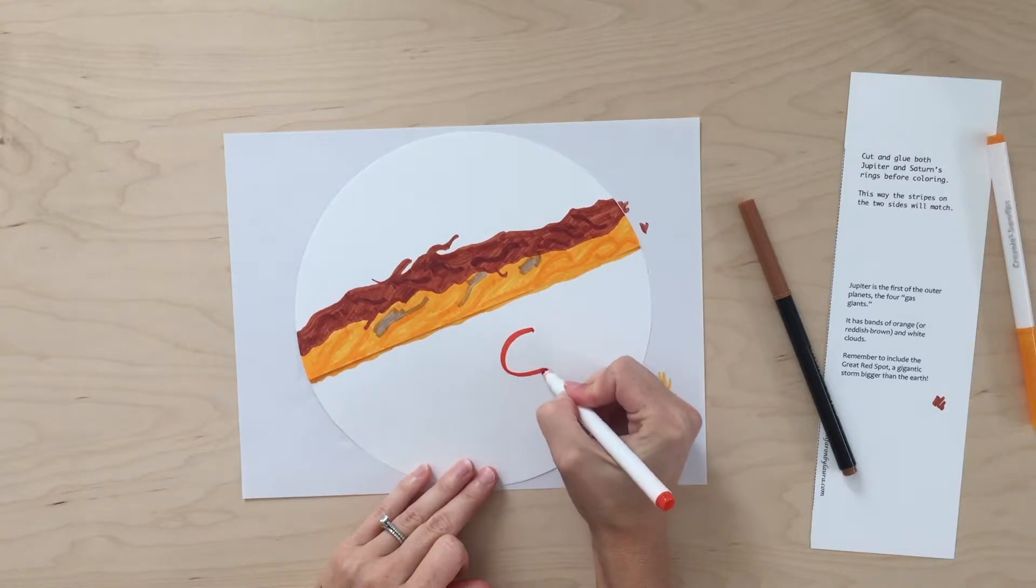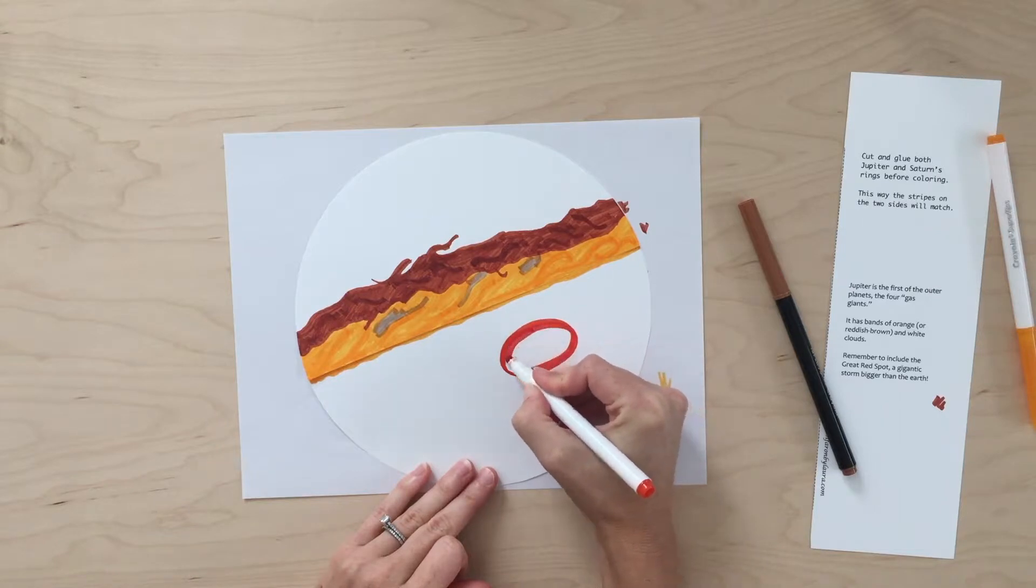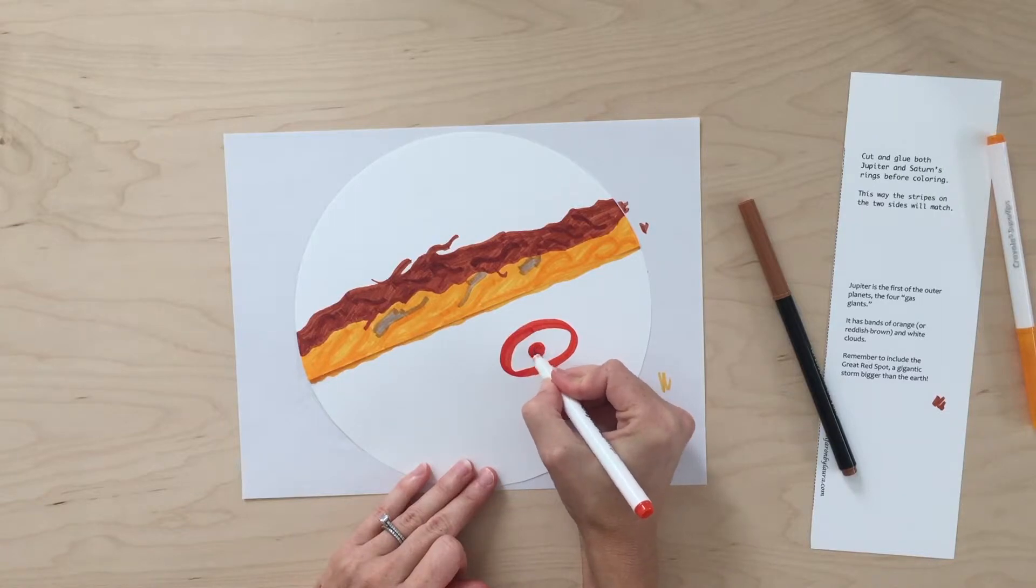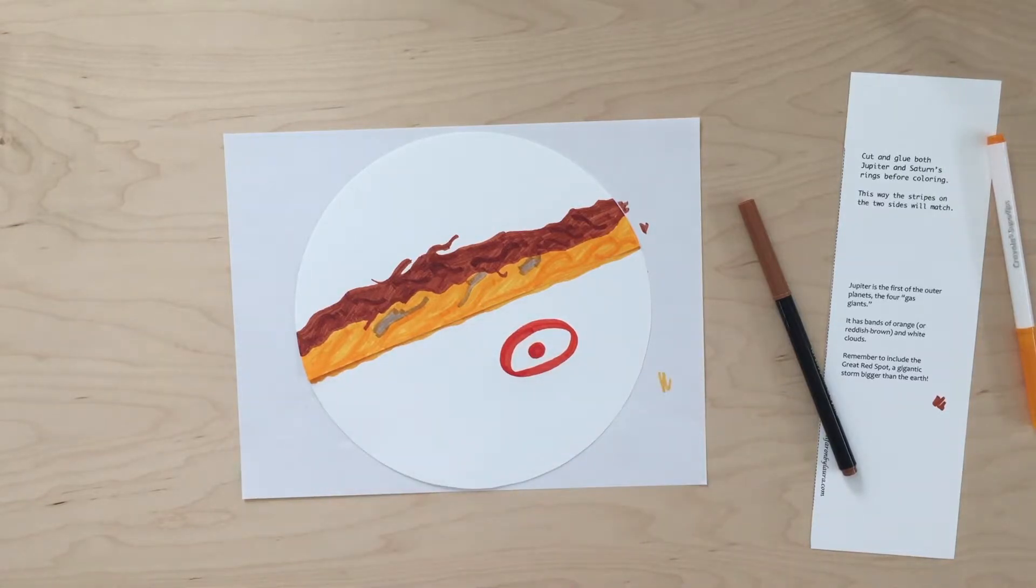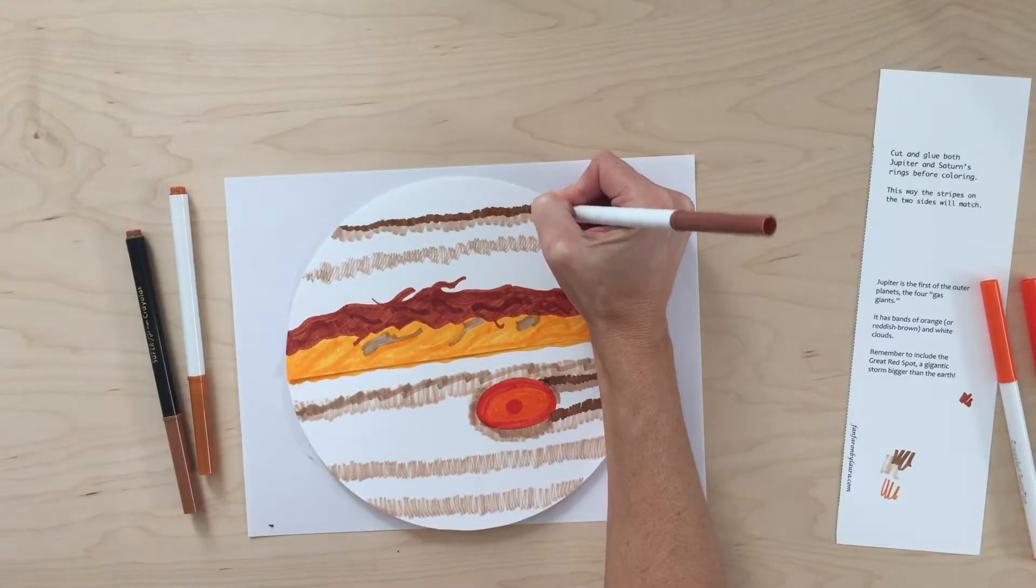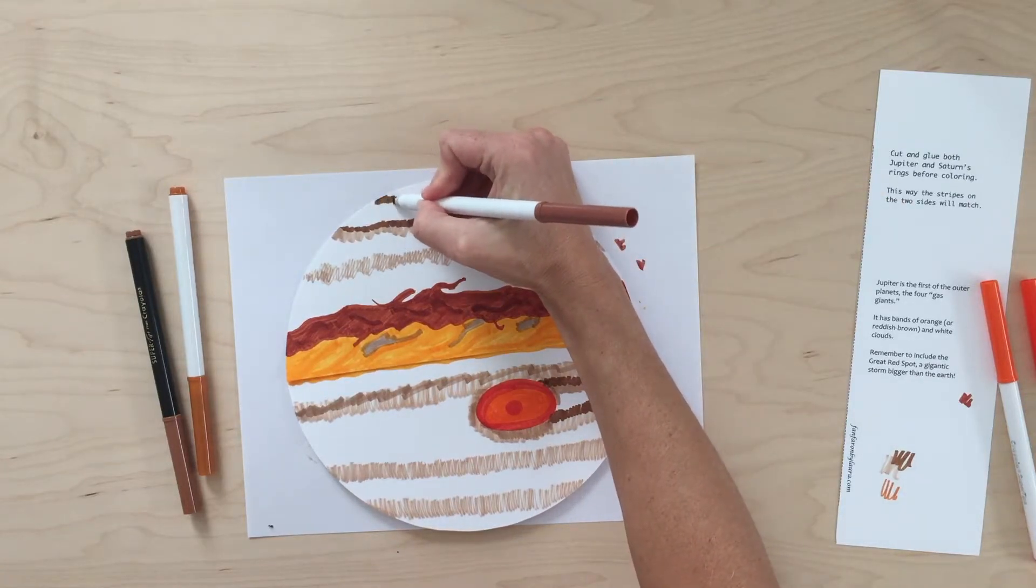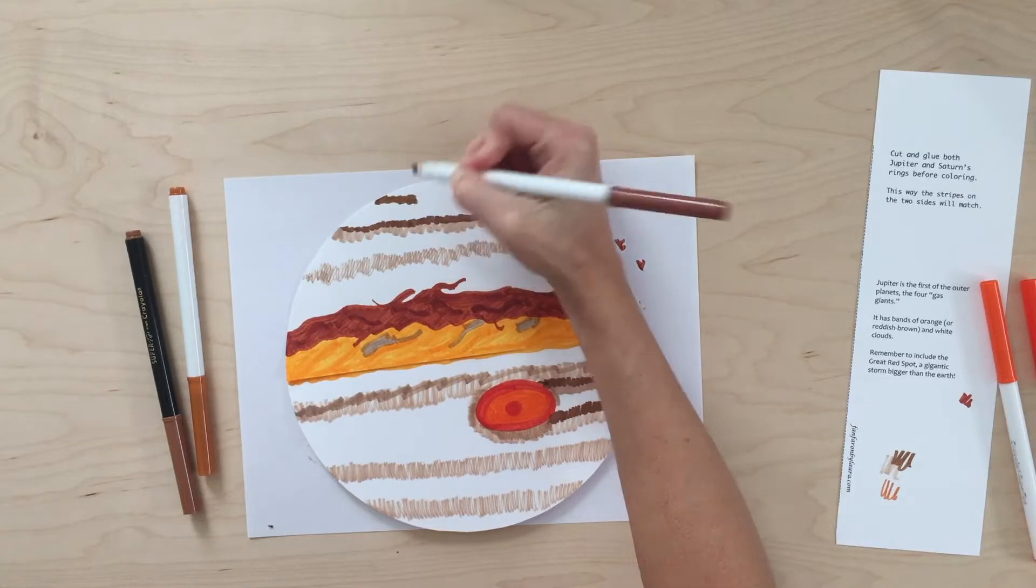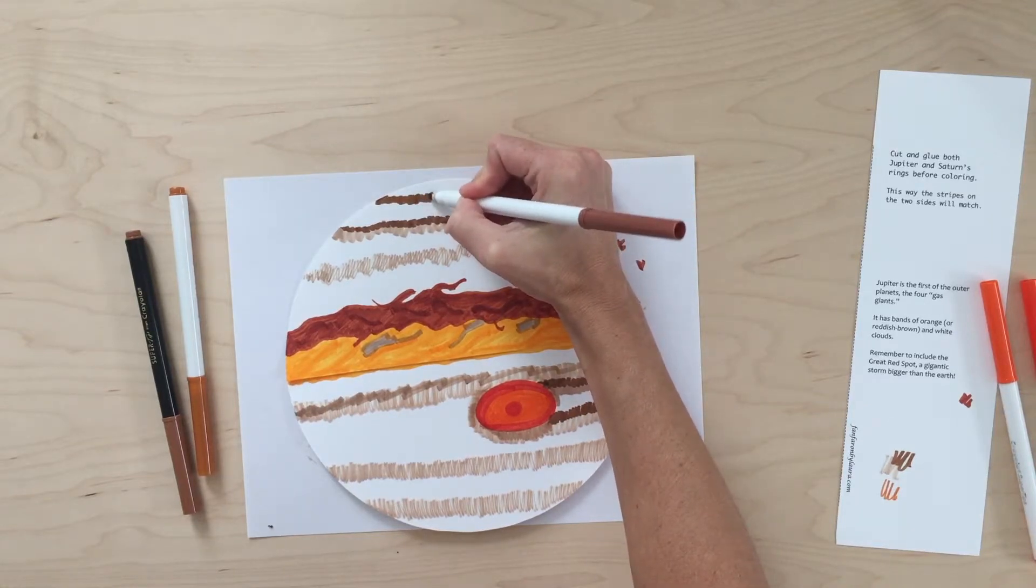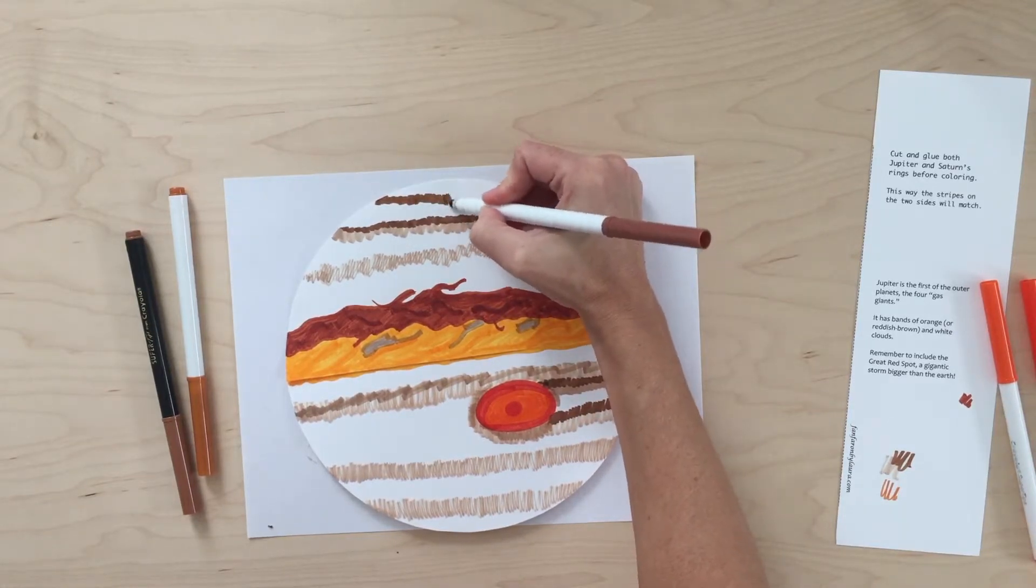Jupiter also has a really well-known storm called the Great Red Spot, and it's a storm that is bigger than our Earth. So make sure you include a Great Red Spot somewhere on your Jupiter. Now I'm just making more stripes of different colors and browns and oranges and leaving some white, just trying to make Jupiter look a little bit more like Jupiter.